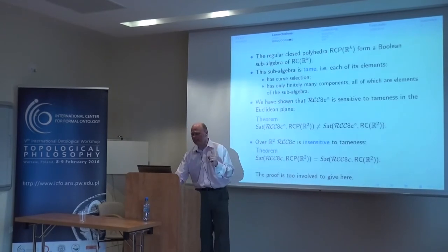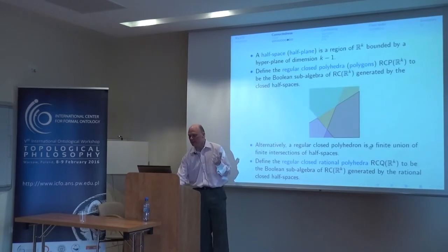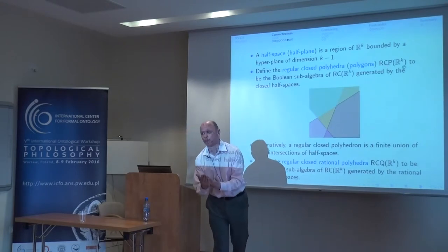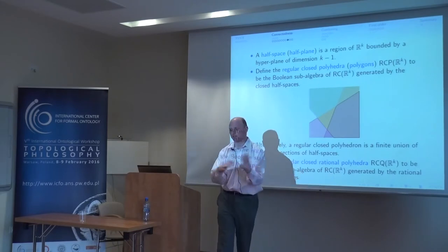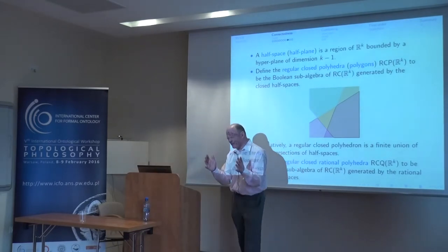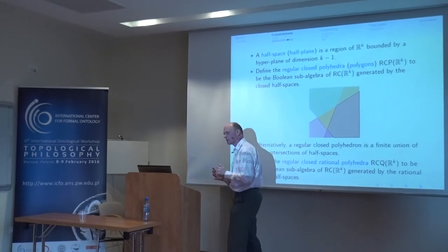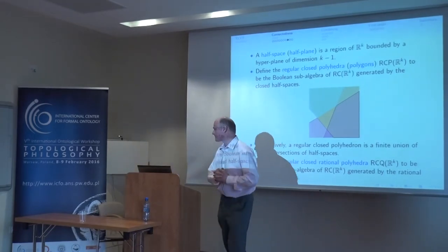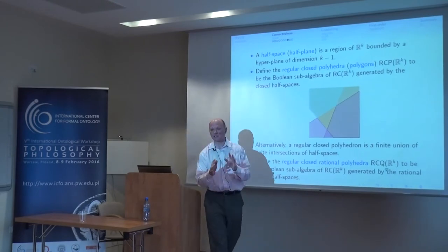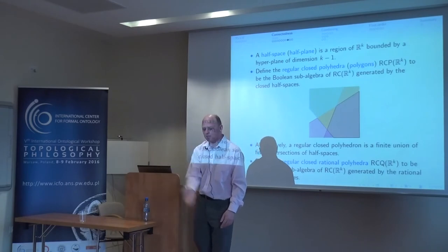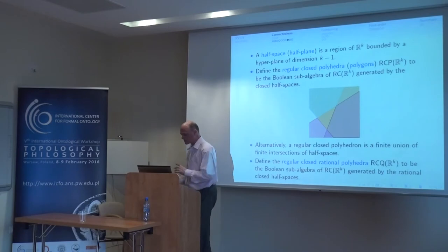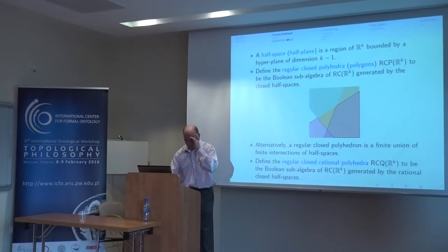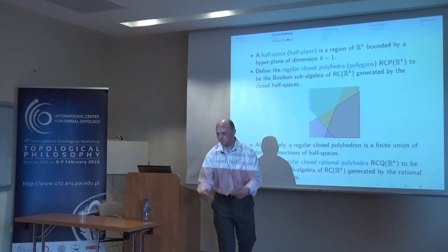The regular closed polyhedra in Euclidean space form a frame. I could limit my attention to the regular closed polyhedra. Even more restrictively, I could look at the regular closed rational polyhedra — the polyhedra whose bounding planes satisfy equations with rational coefficients. Those are a bit easier to deal with because they form a countable model.